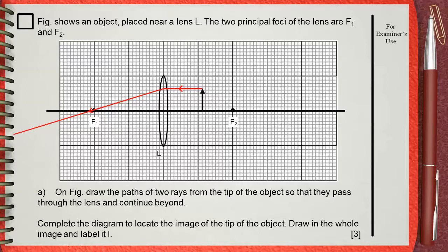We need another light ray from the top. The second light ray you will draw will pass through the optical center of the lens. These two rays will never intersect. That's why we will draw two extensions.